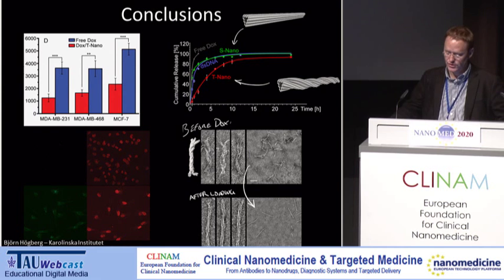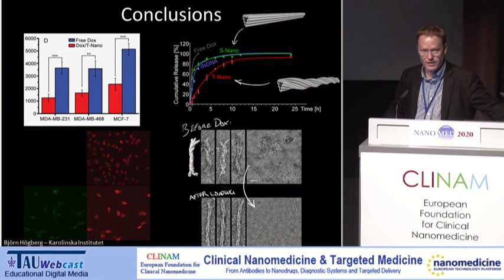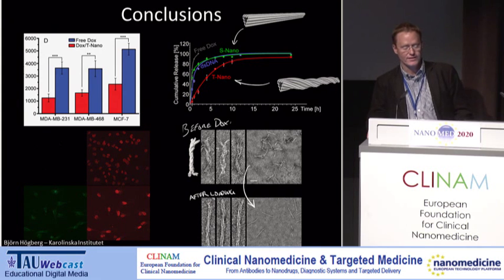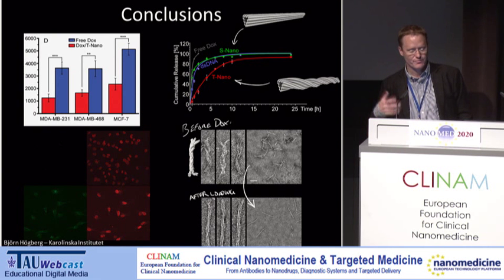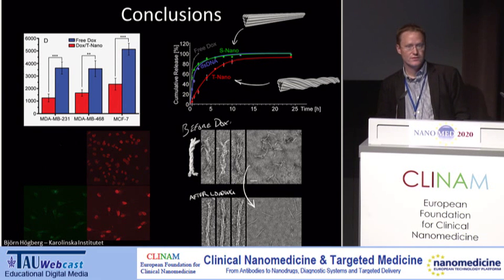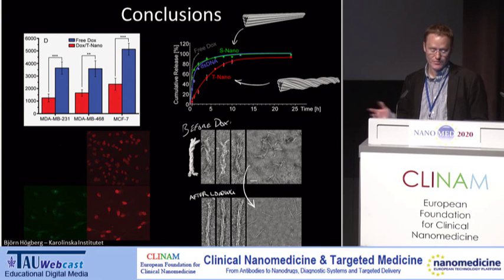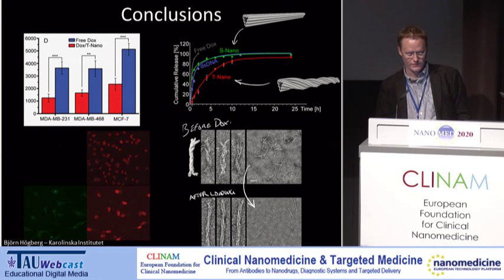To conclude, I hope I have convinced you that by using DNA nanotechnology we now have a new toolbox to make efficient delivery devices for drugs. In particular, I hope this example from my lab — using the power of molecular design via DNA origami to tune the delivery rate of doxorubicin — has provided some inspiration. It is my belief that applications such as this one form the beginning of a new fruitful branch of nanomedicine.